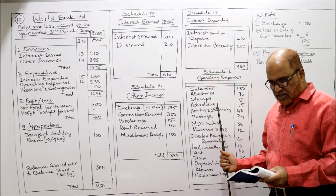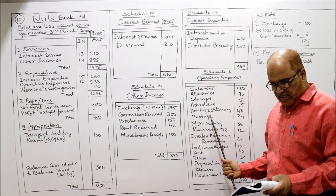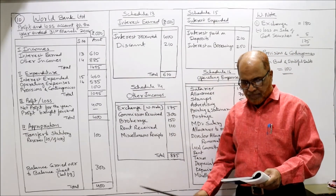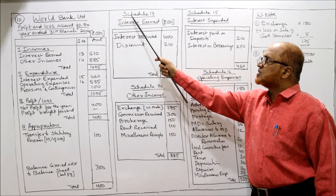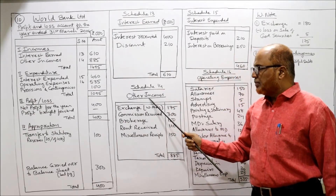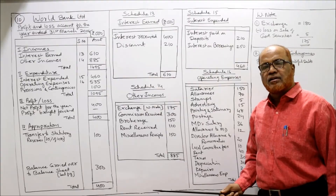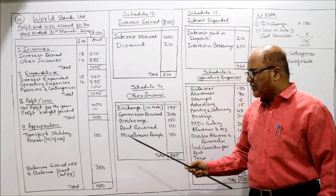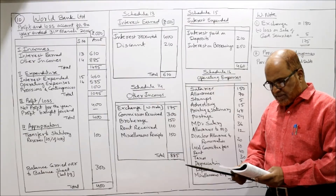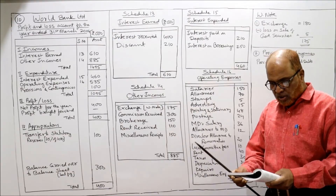Directors' allowances and remuneration, local committee fees and allowances, rent and taxes — all these come under schedule 16 operating expenses. Discount 210 goes in schedule 13. Exchange 180 — in the working note I have made some changes and taken 175; I will explain in the working notes. Rent received and miscellaneous receipts of 150 are other income. Depreciation is operating expenses. Repairs to bank's property is also operating expenses.